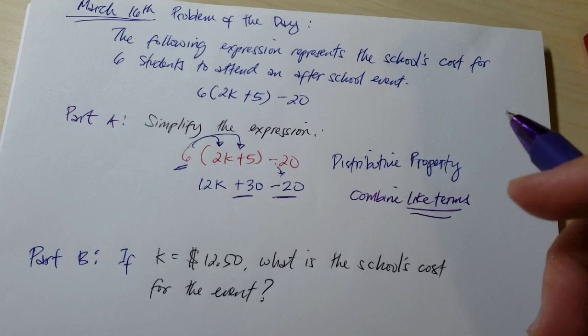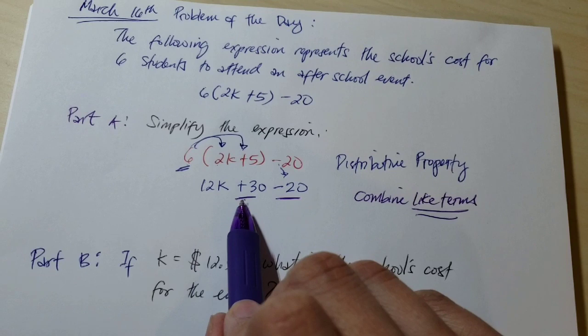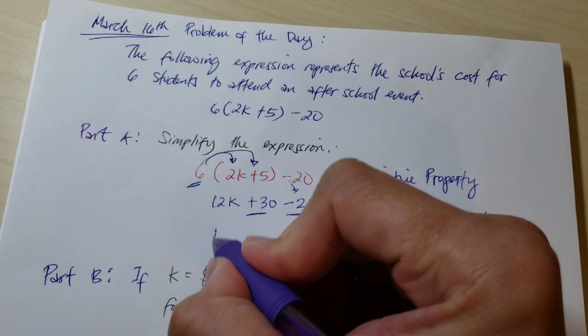In this case, we have two terms that are constants, so let's put them together. That's 30 minus 20, which gives us a positive 10. So it's going to be 12k plus 10. That is the answer for Part A.